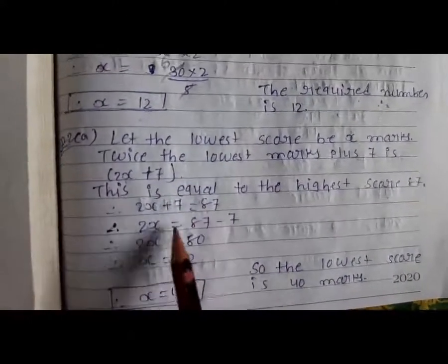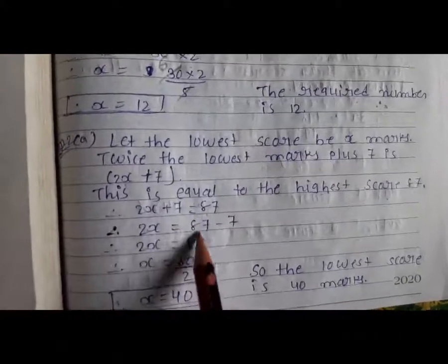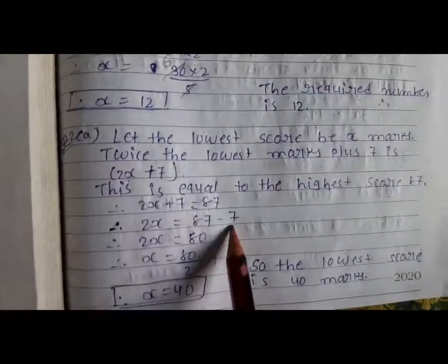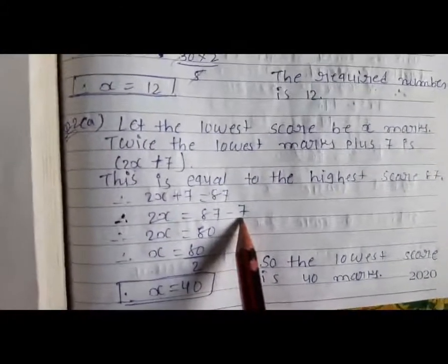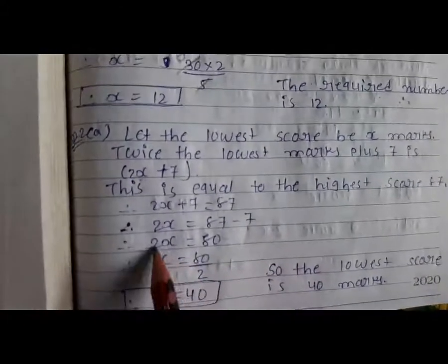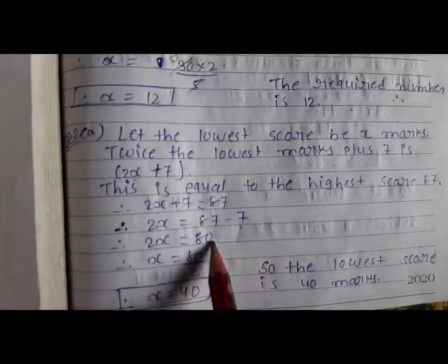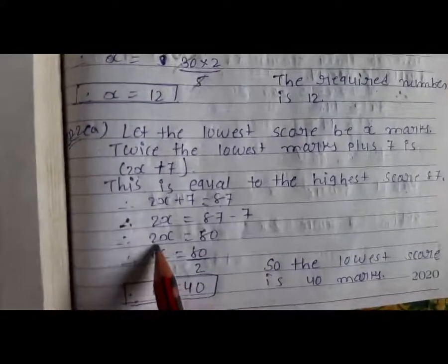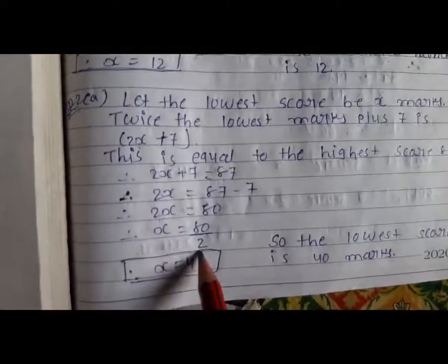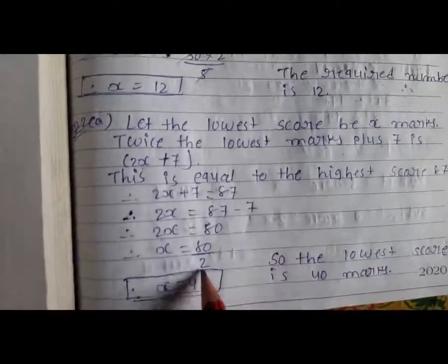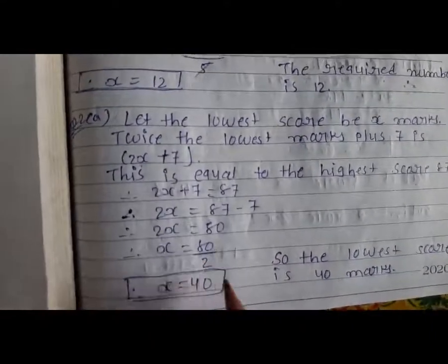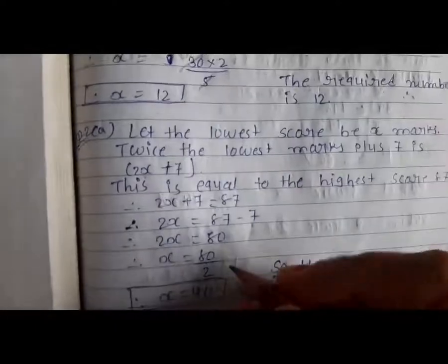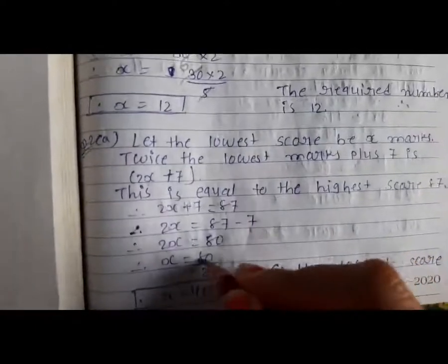So, 2X is equal to 87 minus 7, which equals 80. Since 2 is multiplying on one side, it will divide on the other side. X is equal to 80 divided by 2.